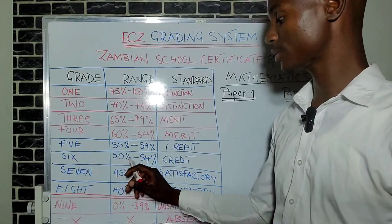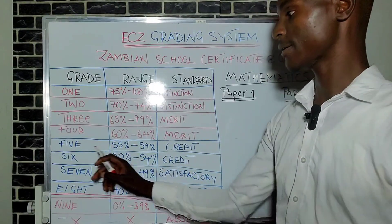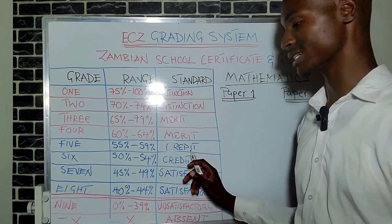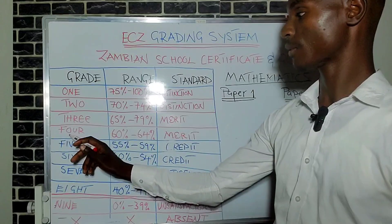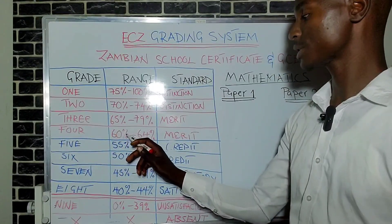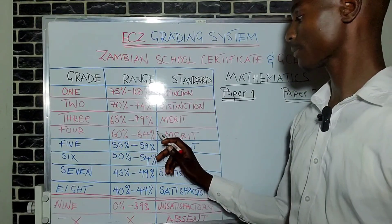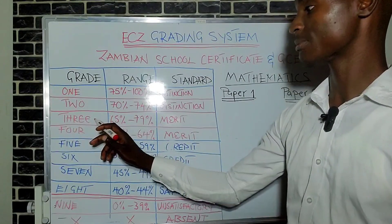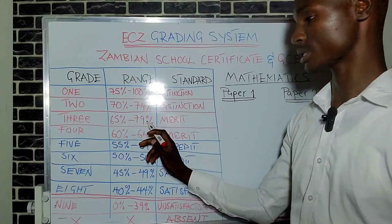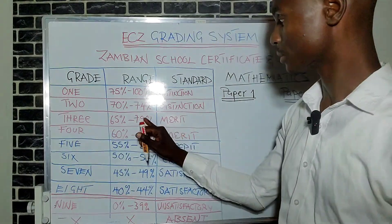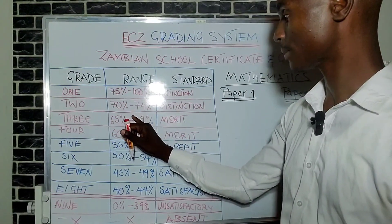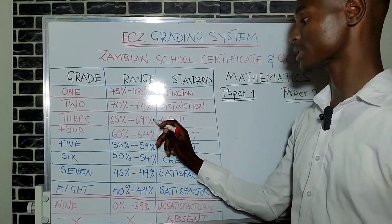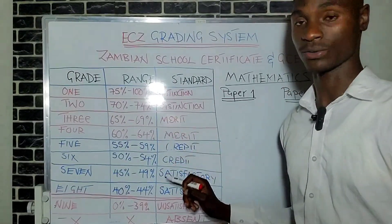Grade 6 is 50 to 54 — that's a 'credit.' Grade 5 is 55 to 59 — also a 'credit.' Grade 4 is 60 to 64 — that's a 'merit.' Grade 3 is 65 to 69 — also a 'merit.'